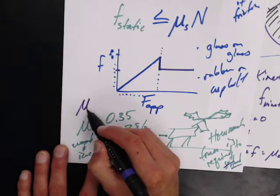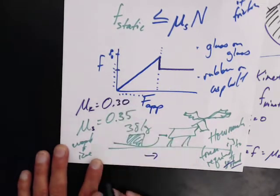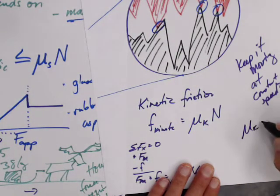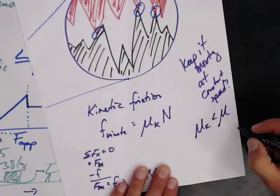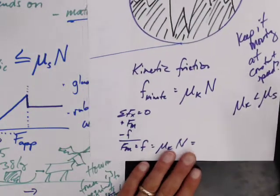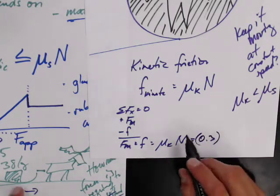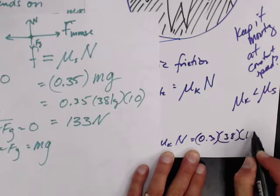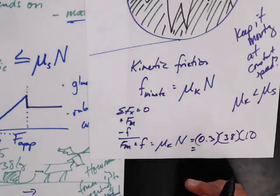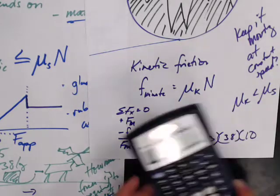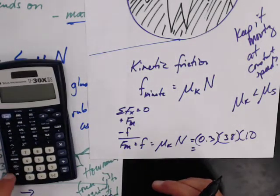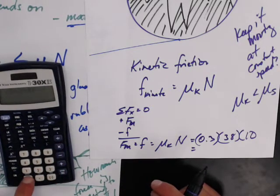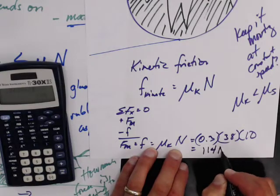Kinetic frictions are generally less than the static frictions. So here I've got 0.3 times 38 kg times 10. Now my moose only needs to pull 0.3 times 38 times 10, which is 114 newtons.